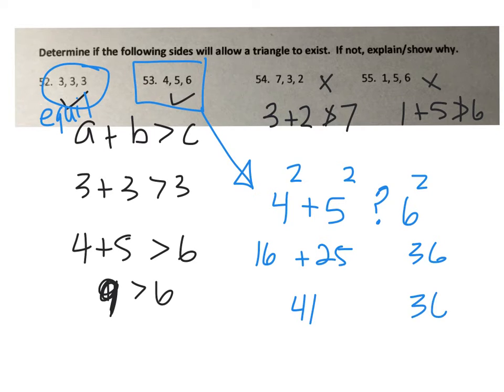41 and 36, so 41 is greater than 36. We know it's not a right triangle. If they were equal, it's a right triangle. If the sum is larger, we have an acute triangle. And if c squared is larger, we have an obtuse triangle.